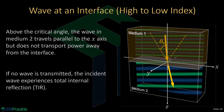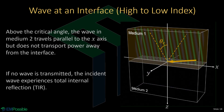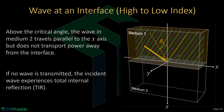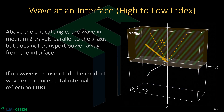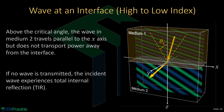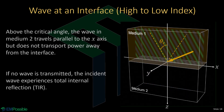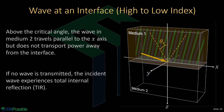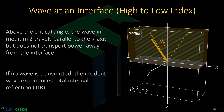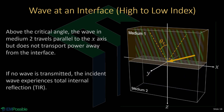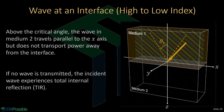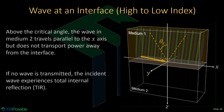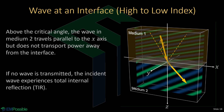Here's a summary of everything that happens when a wave goes from a high index to a low index medium. For angles less than the critical angle, we get transmission — and some reflection, though not shown. For angles greater than the critical angle, there is no angle in medium two that would produce an oscillation fast enough to match the boundary conditions in medium one, so the wave in medium two is cut off and we get total internal reflection.